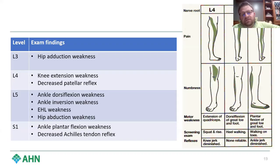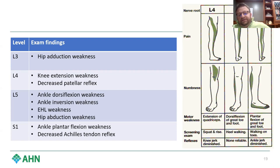When we talk about exam findings, L3 nerve compression leads to hip abduction weakness. L4 gives knee extension weakness with a decreased patellar reflex. L5 gives ankle dorsiflexion and inversion weakness with EHL weakness, and you can also get some hip abduction weakness. S1 gives ankle plantar flexion weakness with a decreased Achilles tendon reflex.